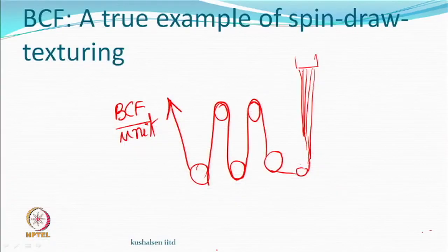Why can we combine BCF with spin-draw but not other texturing technologies? Other texturing technologies run at best around 1000 to 1200 meters per minute. The spin-draw technology operates close to 4000 meters per minute. You cannot combine a fast process with a slow one. In this case, BCF can actually run at 4000 meters per minute, so you can logically combine spinning, drawing, and texturing — and 4000 meters per minute is a very high speed.